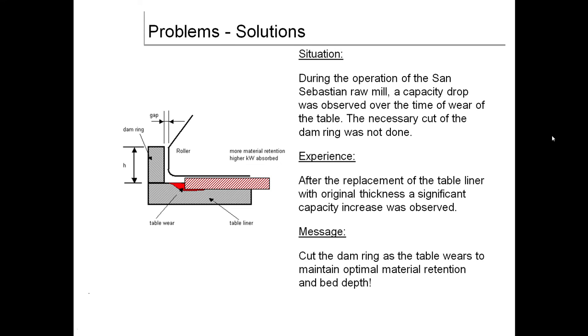Problems and solutions regarding dam ring: Situation - during operation of the raw mill, capacity drop was observed over time of wear of the table. The necessary cut of the dam ring was not done. Solution: after replacement of table liners with original thickness, significant capacity increase was observed. Cut the dam ring as table wears to maintain optimal material retention and bed depth. You can see here in the picture the dam ring height, gap, table wear, and table liner with more material retention and higher kilowatt observed.